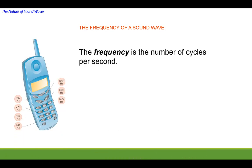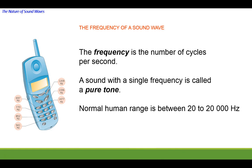So how fast these condensations are formed per second is called the frequency of the wave, the sound wave. And if you happen to have a frequency that's a constant frequency, then you get what's called a pure tone. And normal human hearing has a range between 20 and 20,000 Hertz, which means that the vibrating source is moving back at the lowest end 20 times per second, and at the highest end 20,000 times per second.